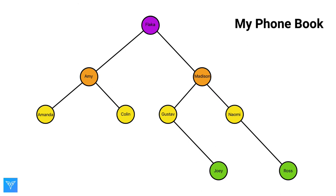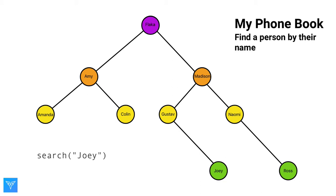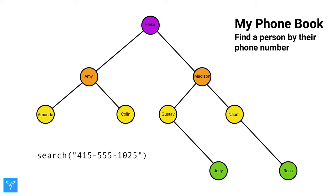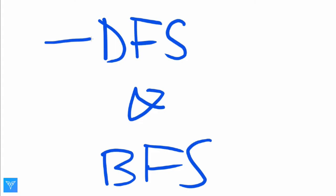Let's say we've got a tree of the numbers in our phonebook, organized by the person's name. If we want to find a particular name in this tree, we'd just use binary search. But if we wanted to find someone by their phone number, DFS or BFS would be a better option. Let's dive into these two search strategies.